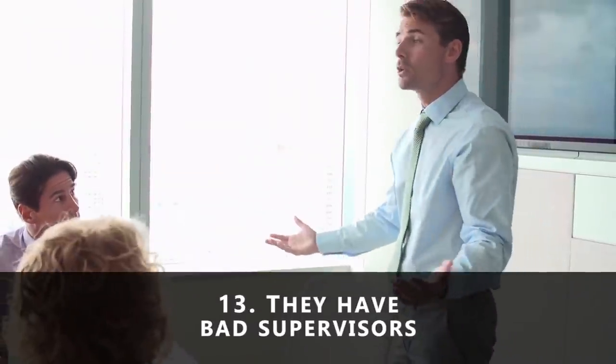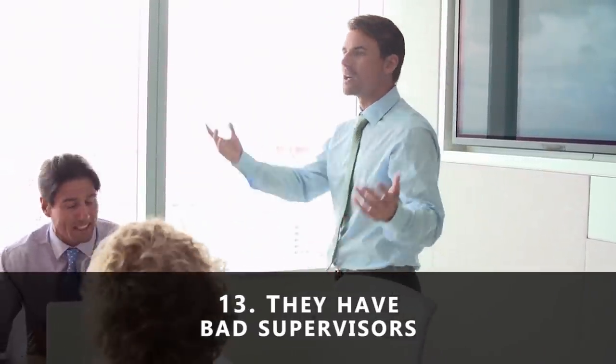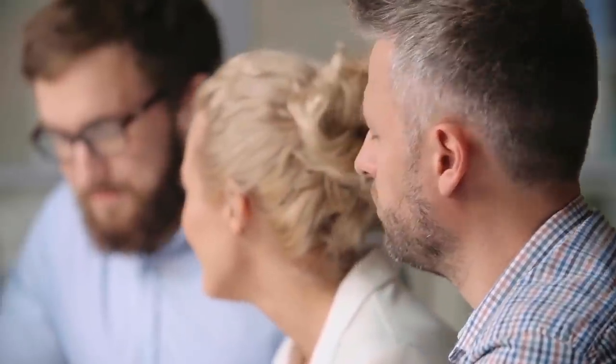Number thirteen: They have bad supervisors. A good reason why people leave their jobs is terrible supervisors or managers. Sometimes the manager misrepresents what the employee has said or done. When they treat the employees badly, the employees will leave.